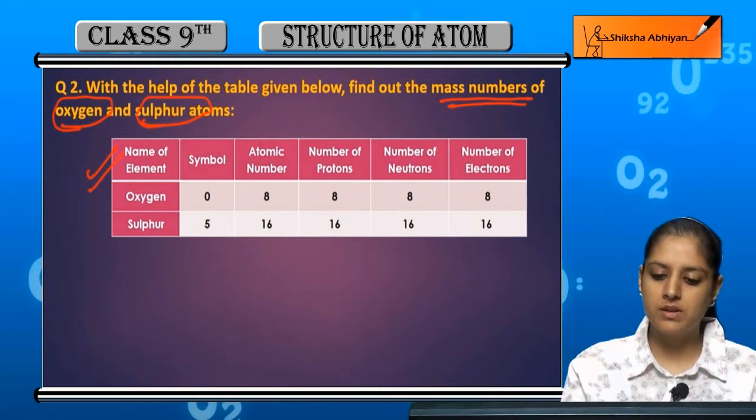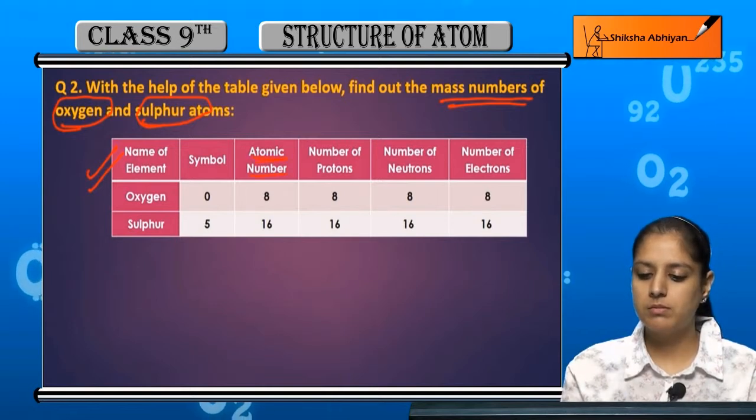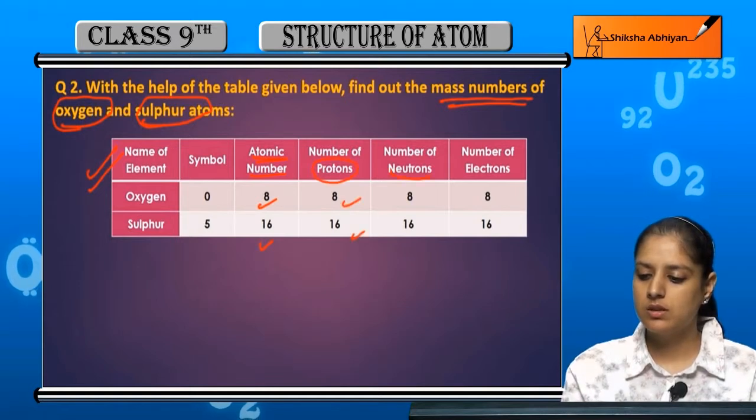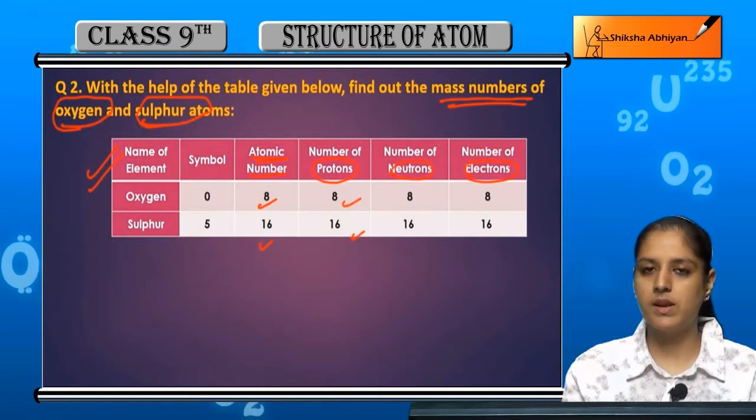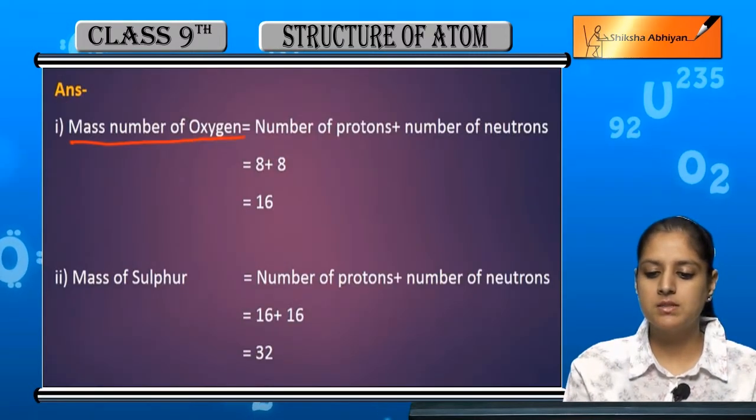Symbols given hai O and S - oxygen ka O, sulfur ka S. Atomic number given hai 8 and 16. Number of protons, number of neutrons, number of electrons - in ko use karke hume mass number nikalna hai.